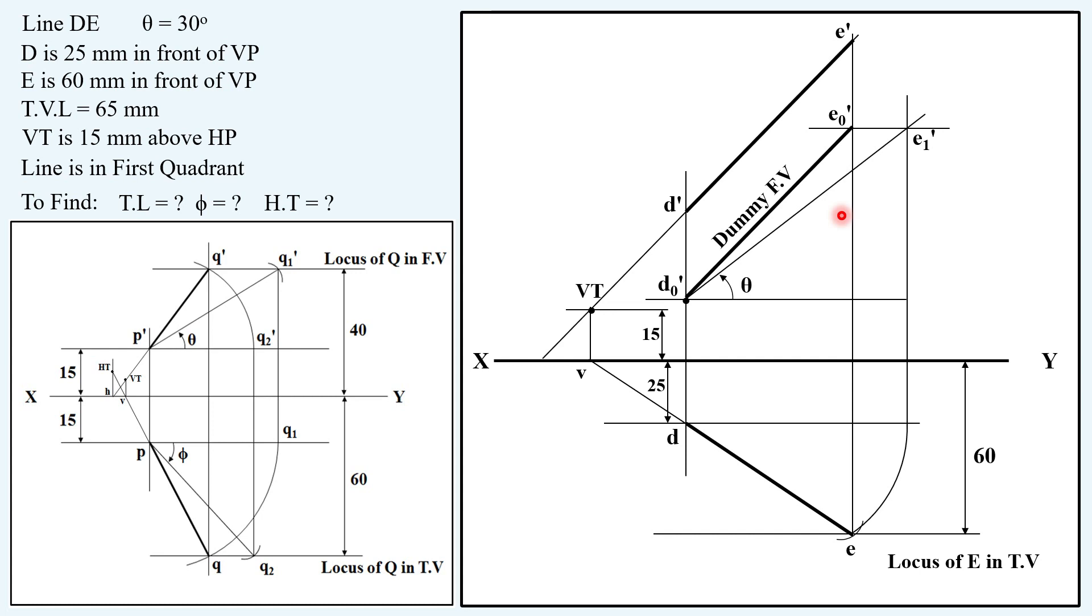If you extend the front view meeting XY line, this will be H. Drawing a vertical projector and obtaining intersection of this vertical projector with the top view, you have located this as HT. This is a locus of E in front view. If you take this length D0' to E1' in your compass, keeping it here at D, cutting an arc on this locus of E in top view, you can obtain the angle phi also.